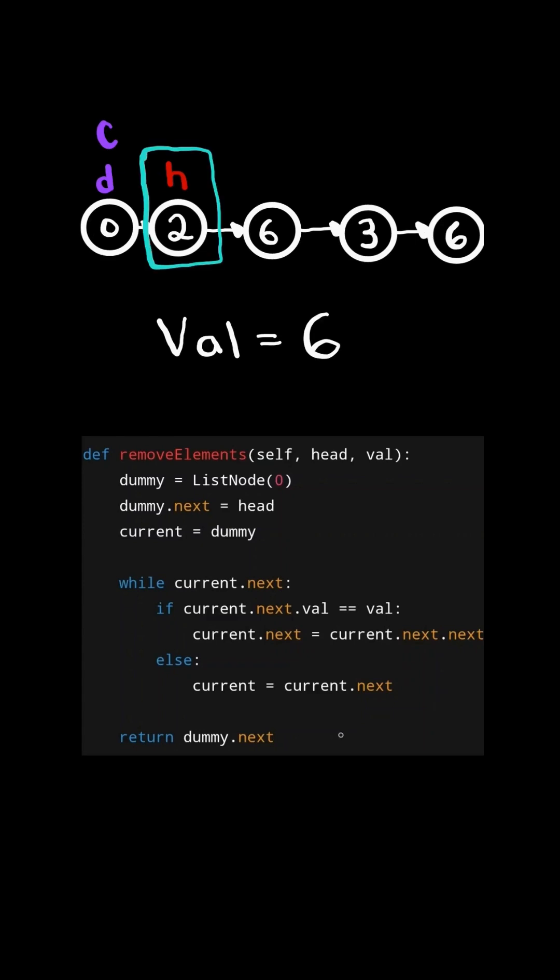And then we iterate through the linked list while the current.next is not null. We check if the node's value equals the integer. In this case, they're not equal. So we advance current by setting current equals to current.next. And we continue.